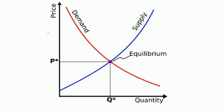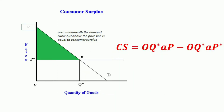The point where the demand and supply curves cross or intersect with each other is called the equilibrium point, where P* is the equilibrium price and Q* is the equilibrium quantity. Consumer surplus is the difference between the price that consumers are willing to pay, shown by the area under the demand curve, and the equilibrium price above it.